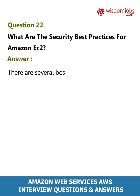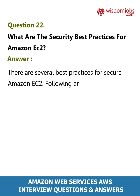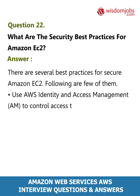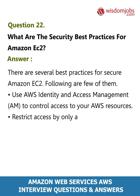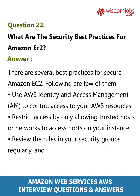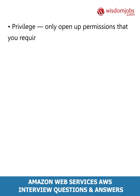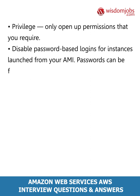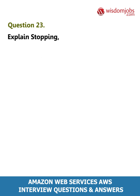Question 22: What are the security best practices for Amazon EC2? Answer: There are several best practices for securing Amazon EC2. Use AWS Identity and Access Management (IAM) to control access to your AWS resources. Restrict access by only allowing trusted hosts or networks to access ports on your instance. Review the rules in your security groups regularly and apply the principle of least privilege — only open up permissions that you require. Disable password-based logins for instances launched from your AMI, as passwords can be found or cracked and are a security risk.